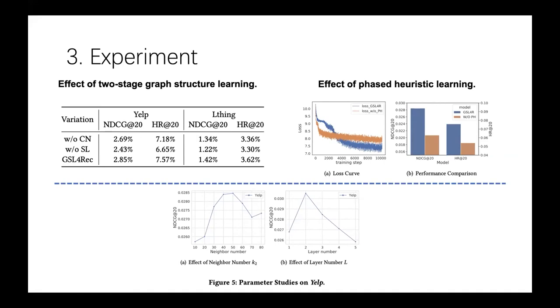And then we disable the phased heuristic learning strategy and term it as without PH. And we can observe that the framework driven by the phased heuristic performs significantly better than the one without it. We find that the loss function of the model without the phased heuristic drops more quickly at the beginning and turns to a steady decreasing state afterward. However, with the phased heuristic, GSL4REC is more likely to converge to a better local optimum instead of getting an early stop. We vary the selected number and the convolution number to investigate their influence. And we found that k2 equals to 50 and L equals to 2 are the optimal choices in our experimental scenario.